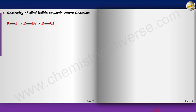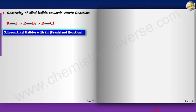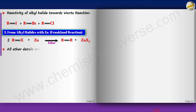A reaction very similar to the Wurtz reaction is the Frankland reaction — the only difference is that zinc is used instead of sodium: 2 RX + Zn → R–R + ZnX₂. The mechanism is essentially the same.